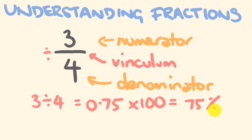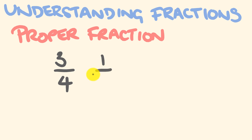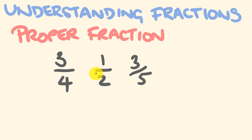So what types of fractions do we have? A proper fraction is what you think of as a normal fraction, where the denominator is bigger than the numerator. The number we had before — three quarters — is an example of a proper fraction. A half would be another example, or something like three fifths. These are all examples of proper fractions where the denominator is bigger than the numerator.